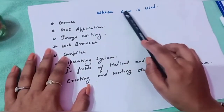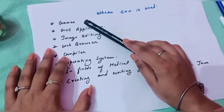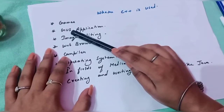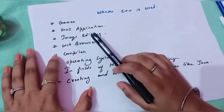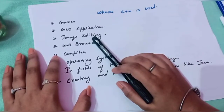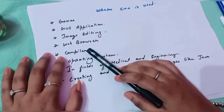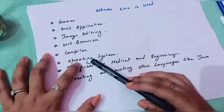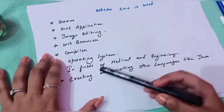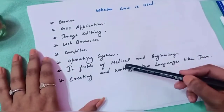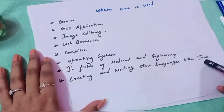Now the last topic — where C++ is used. C++ is used in games; some games are built using C++ in the background. It is also used in graphical user interface applications where users can interact using buttons and keys. C++ is used in image editing software, for example Photoshop and ImageReady. It is used in building some web browsers, for example Mozilla Firefox. C++ is also used in building compilers, and in building operating systems — for example, Windows uses some C++ code in the background. C++ is also used in the fields of medicine and engineering.